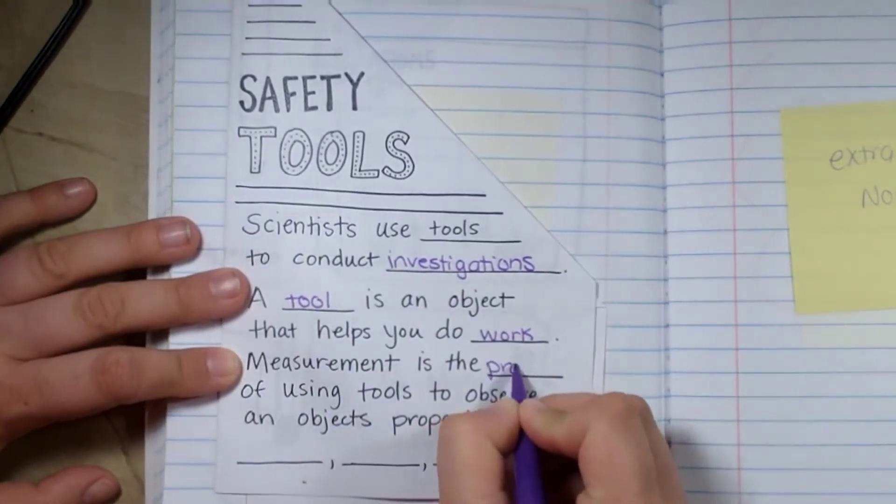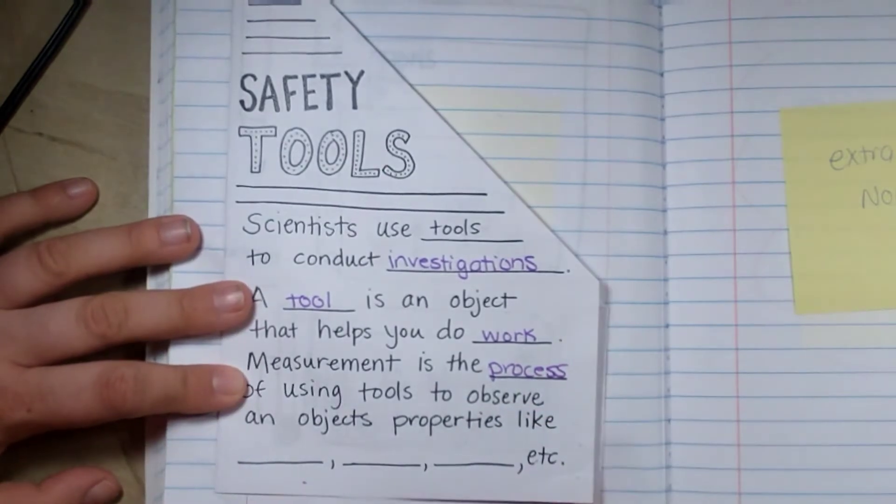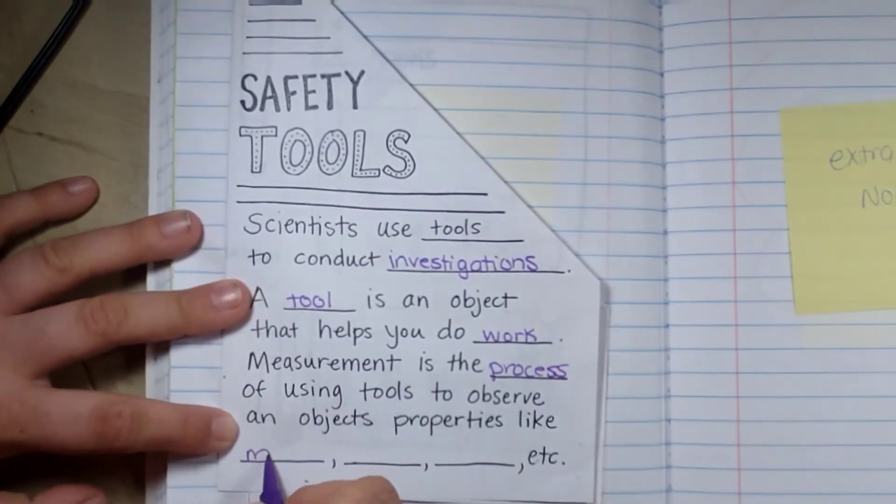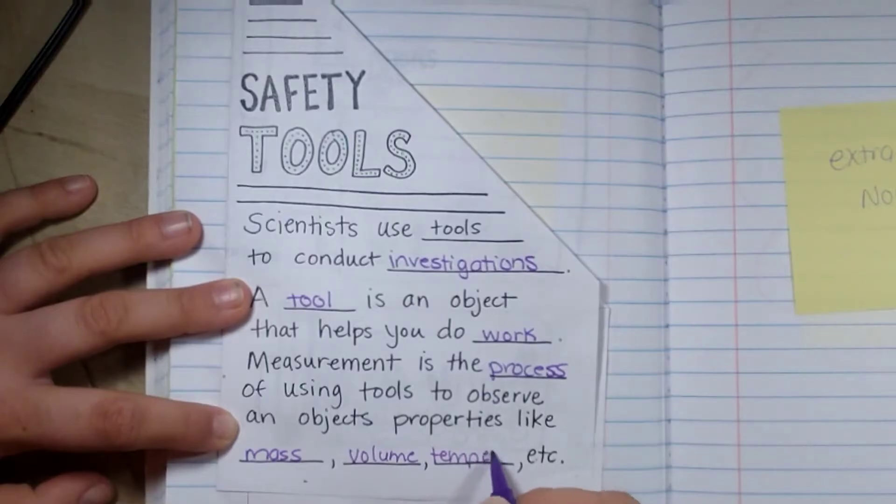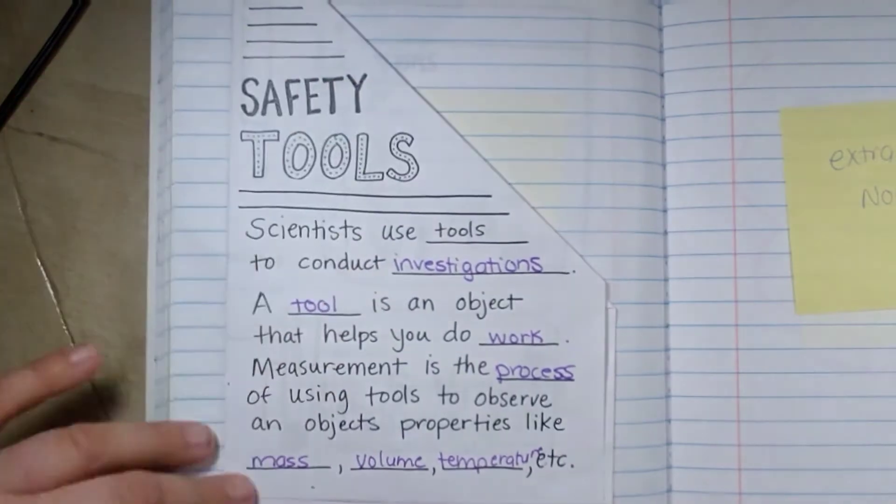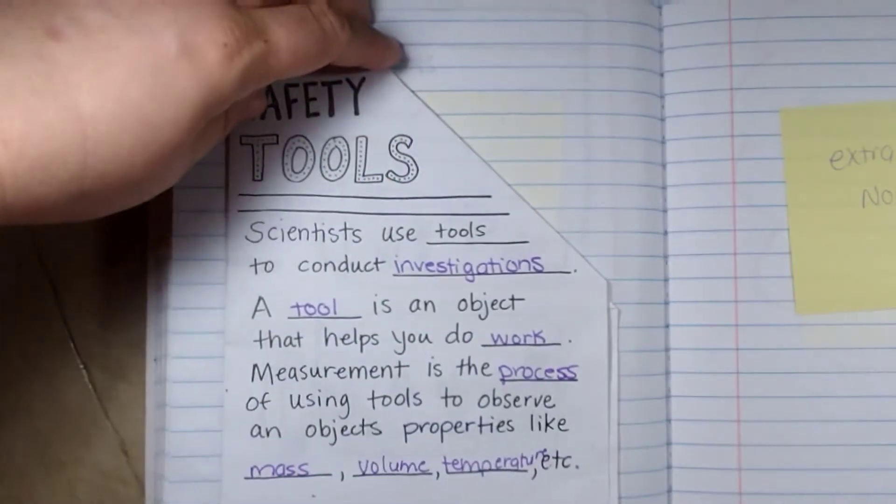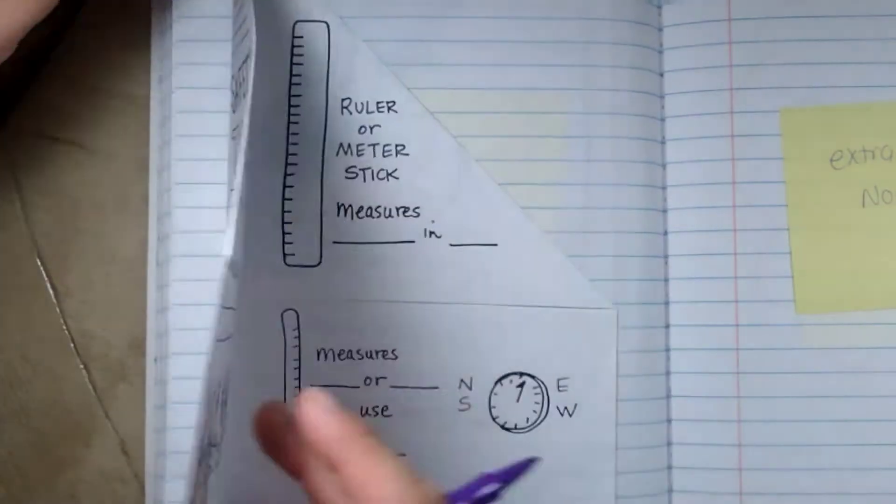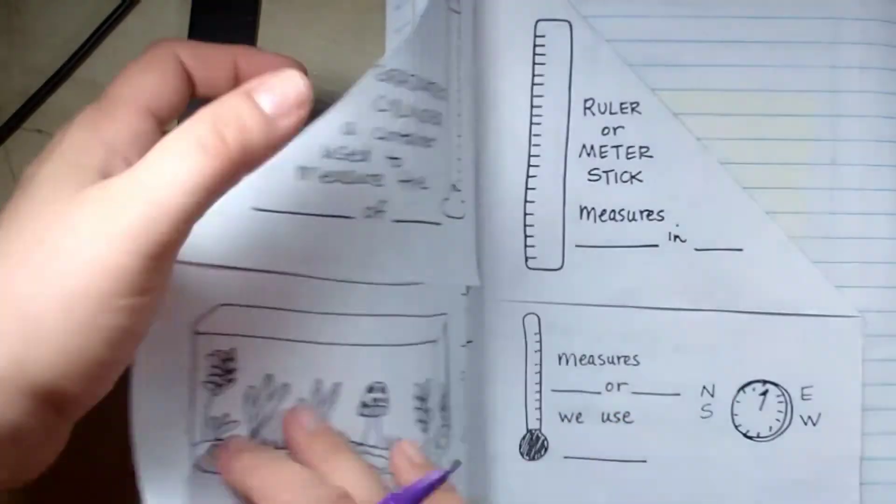Measurement is the process of using tools to observe an object's properties like mass, volume, temperature, it could be length, weight, things like that. So that is the purpose of tools. And once we're done with this, I'm going to show you how to fold it.